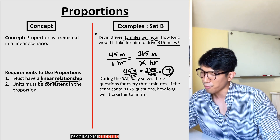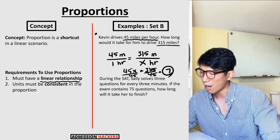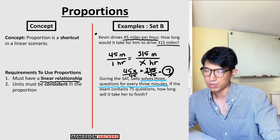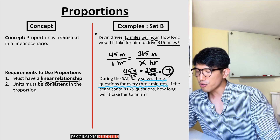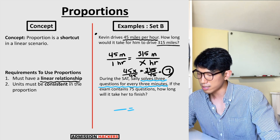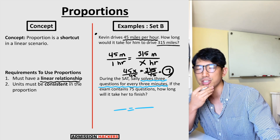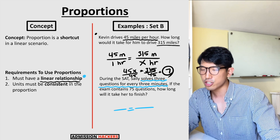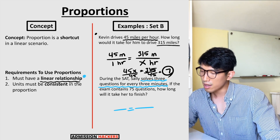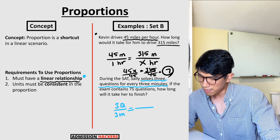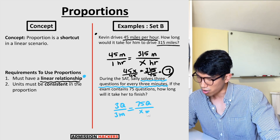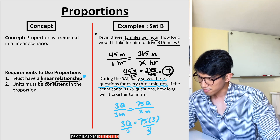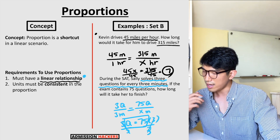Next question: during the SAT, Sally solves three questions for every three minutes. If the exam contains 75 questions, how long would it take her to finish? The linear relationship is 'three questions for every three minutes.' Make sure you identify the linear relationship before setting up a proportion — don't just go with your gut. Setting up the proportion: three questions over three minutes equals 75 questions over Q minutes. Cross multiplying: 3Q equals 225; Q equals 75. It takes her 75 minutes.